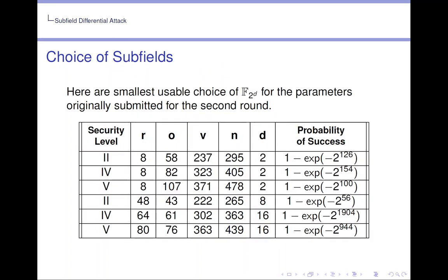Here are the smallest usable choices of F_{2^d} for the parameters originally submitted for the second round. And in this table we see that d is always much smaller than r and our probability of success is almost 1 in each case.